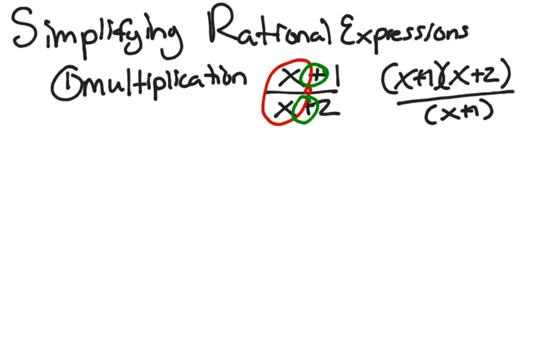On the other hand, here I have x plus 1 times x plus 2 over x plus 1. And I can cancel out the unit x plus 1. If I think of x plus 1 as being its own unit, its own object, I'm canceling out all of x plus 1. I'm not just canceling out x and 1. I'm canceling out the whole thing.